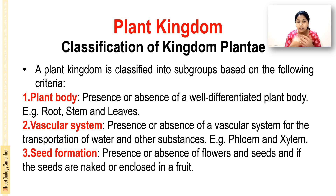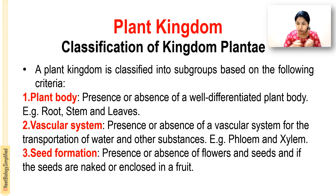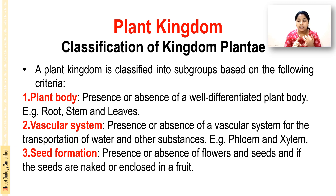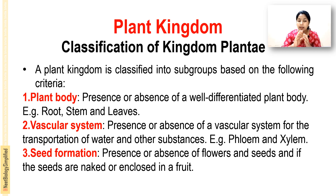Next is the vascular system — the presence or absence of a vascular system for the transport of water and minerals from one place to another. Examples of the vascular system are xylem and phloem. The third criterion is seed formation — whether flowers are produced, whether flowers convert to seeds, and whether seeds are naked or enclosed.